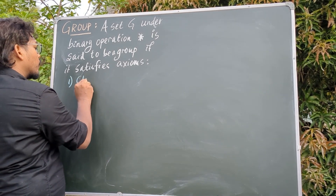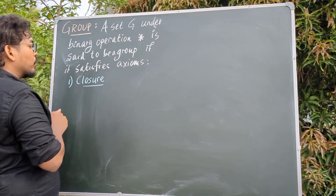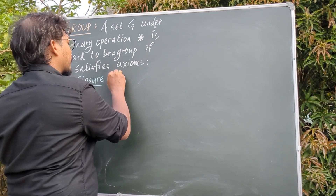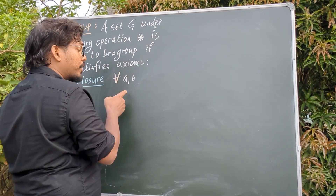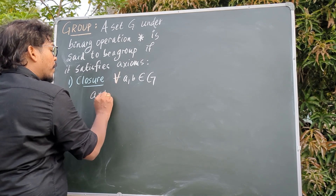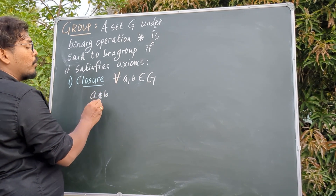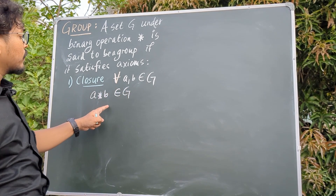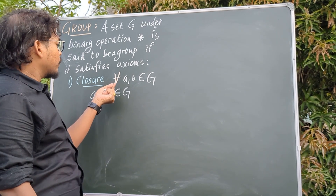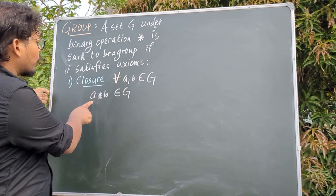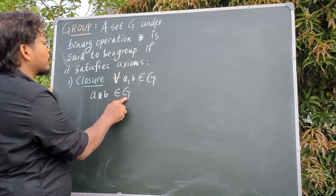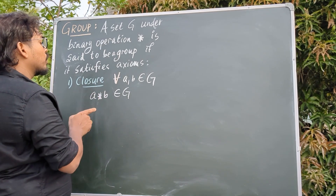What does the closure axiom say? For any elements A and B of the set G, if they are combined with the operation star, then that resulting element also lies in the set G. If that is the case, we say the set G is closed under the operation star. Take any two elements of the set G, combine them with the operation star — the product you get also lies in the set G.